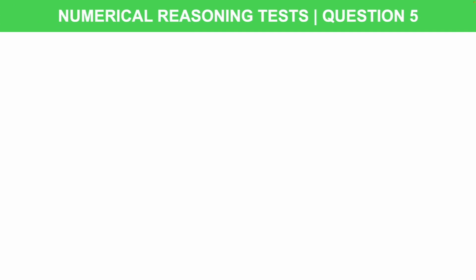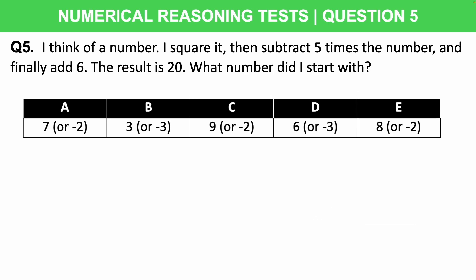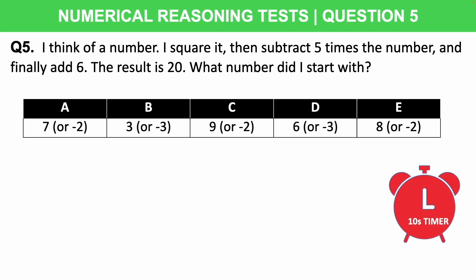Let's end with a really tricky one — most people will struggle with this, so don't be too harsh on yourself. Question 5: I think of a number, I square it, then subtract 5 times the number, and finally add 6. The result is 20. What number did I start with? You'll notice in the answer options there is both a positive number and a negative number. This question is likely harder than what you would actually face. You have 10 seconds.